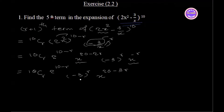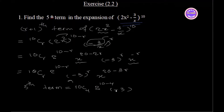To find the term independent of x, set 20 minus 3r equal to 0, so r equals 4. Wait — that gives 20 minus 4 equals 16. So for r equals 4, the term is 10c4 times 2 power 10 minus 4, times minus 3 to the whole power 4, times x to the coefficient of x.